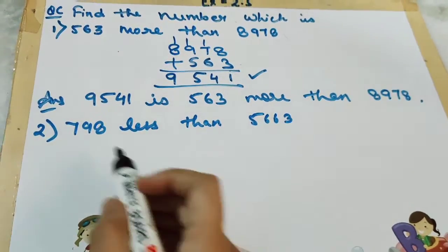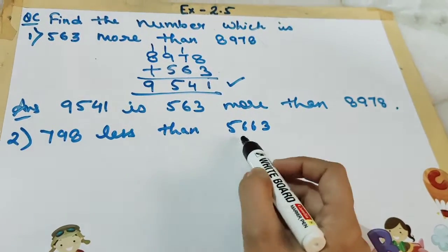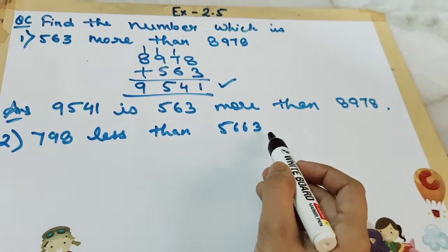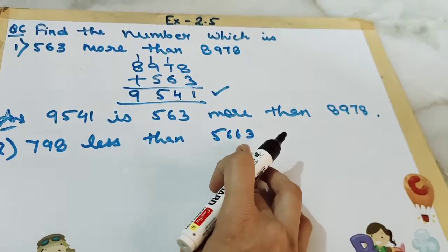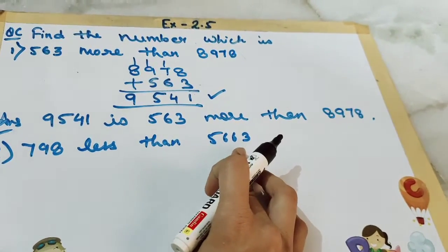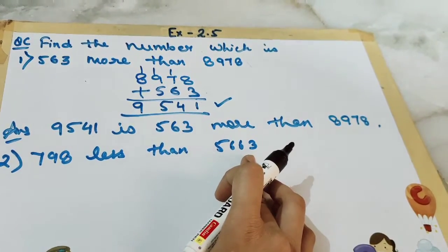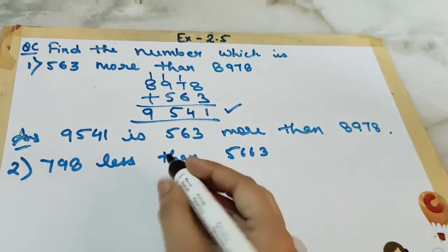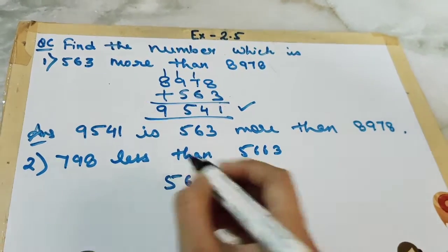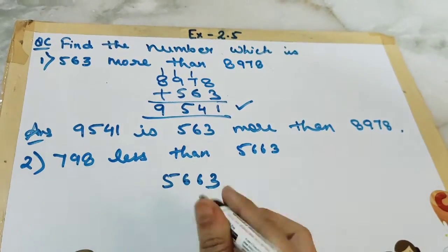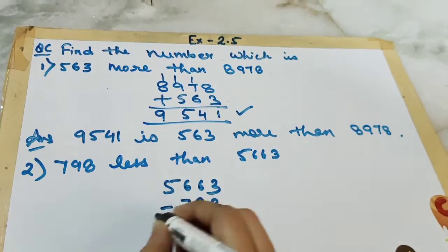Next question is 798 less than 5,663. Whenever we have to subtract, remember that the greater number or the bigger number will be the minuend. So first we will write the bigger number and then we will subtract the smaller number. Now let's subtract.